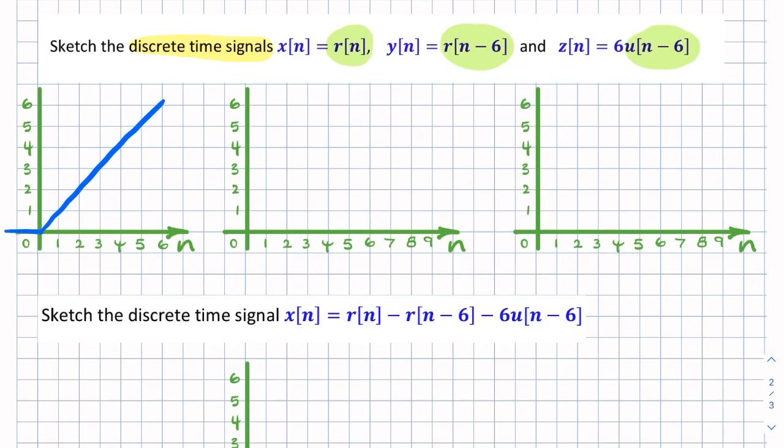But actually, that would be r(t). A discrete unit ramp would look very similar, except it would be discrete. It would be zero for all negative time, zero at t equals zero, or n equals zero.